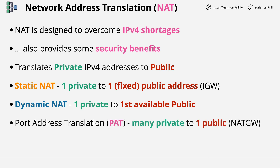Lastly, we have port address translation, where many private addresses are translated onto a single public address. This is likely what your home internet router does. You might have many devices — laptops, computers, tablets, phones — and all of those will use port address translation, also known as overloading, to use a single public IP address. This method uses ports to help identify individual devices, and I'll cover in detail how this works later in this video.